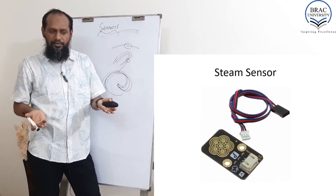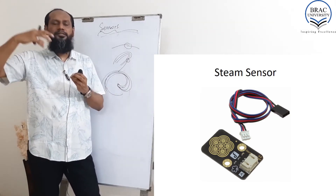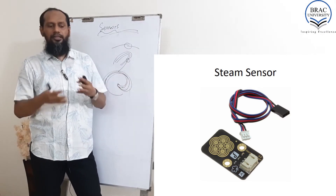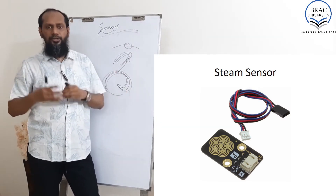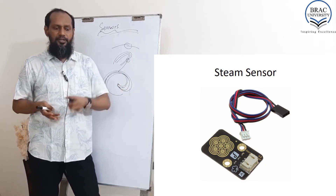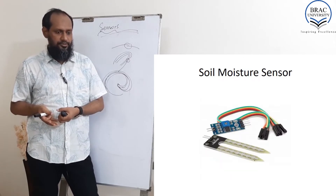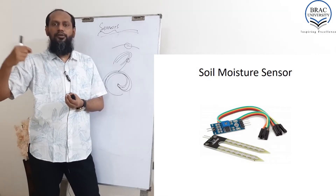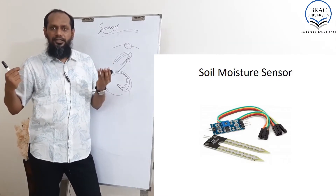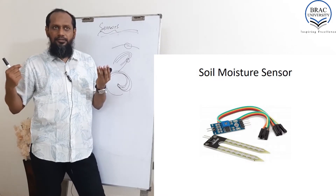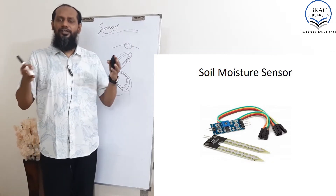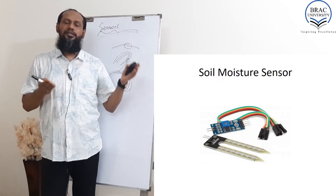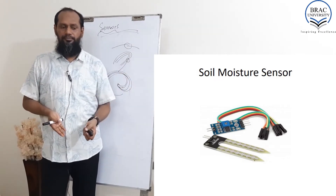The steam sensor is the same - there are conductive lines. When steam comes, that means the amount of water conductivity decreases. Soil moisture sensor is the same - inside the soil, if the amount of water increases, the conductivity increases. If there is no water and it is dry, there is no conductivity. So all these things use the same technique - a very, very cheap technique.